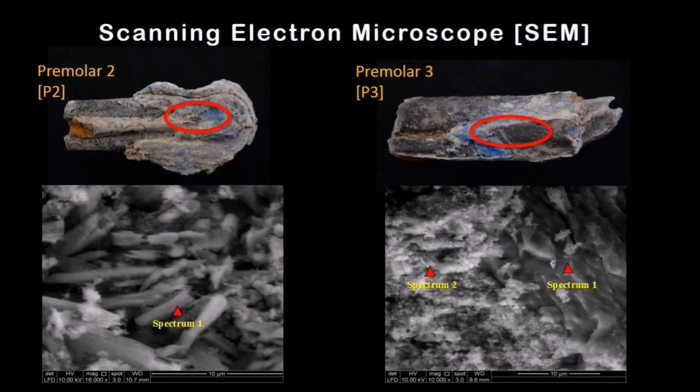On the SEM you can see the black and white images. I labeled Spectrum 1 for Primola 2 as the focal area — you can see there is some crystal-like structure. For Primola 3, Spectrum 2, if you look carefully it appears rather granulated, while Spectrum 1 looks flat, probably the surface of the tooth itself.